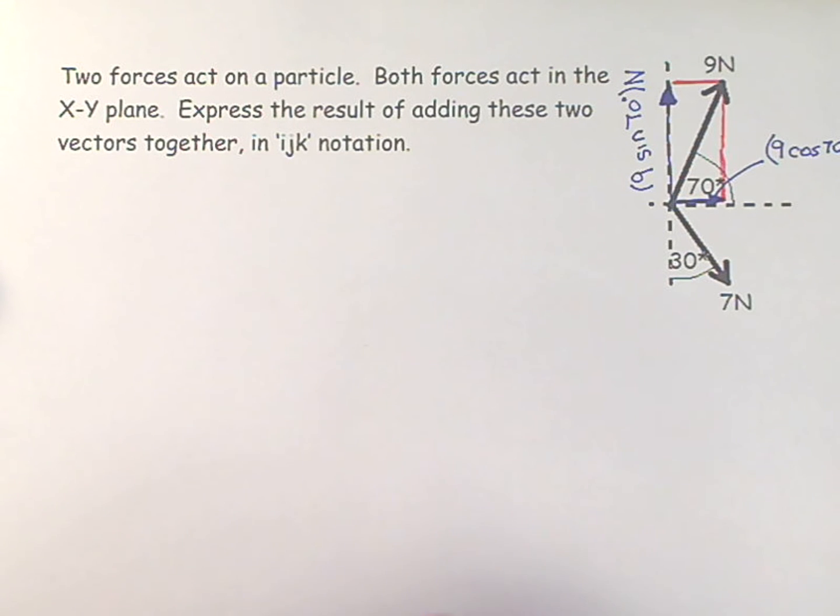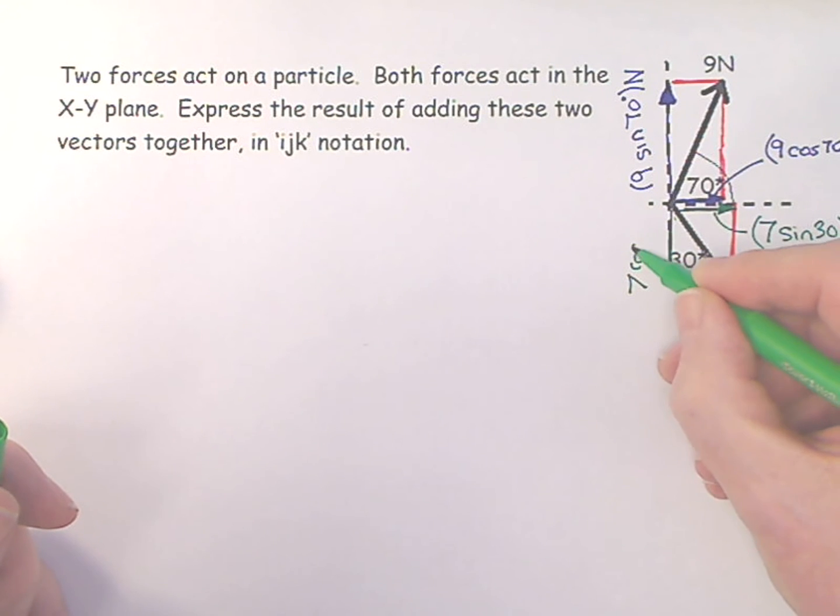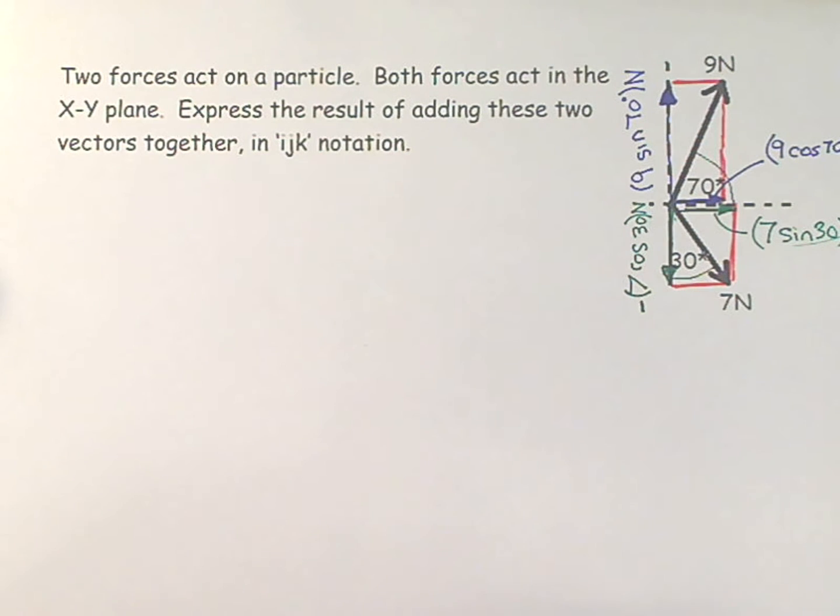I can do the same thing with these guys. I can imagine projecting this vector back, and this vector back, and that will give me a horizontal vector and a vertical vector. This one would be 7 sine 30 newtons, and this here would be 7 cosine 30 newtons. But this is a minus sign because this is pointing downwards. This is positive because it's pointing to the right, and this is positive because it's pointing upwards. But this guy here is negative because it's pointing downwards.